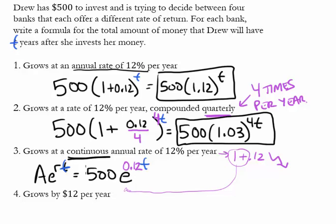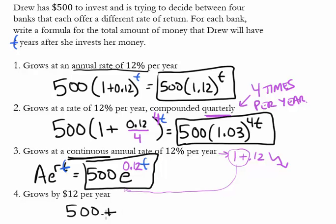Bank 4 grows by $12 per year — that's a linear model. Starting with $500 and adding $12 each year gives a model with a slope and a y-intercept, not exponential growth.